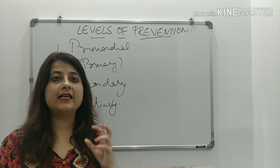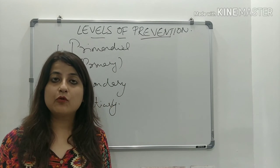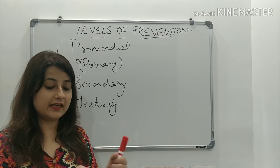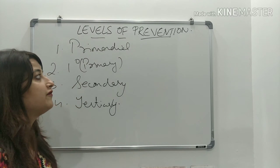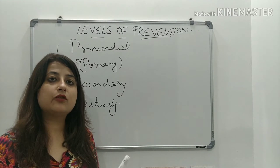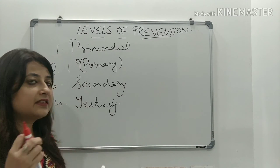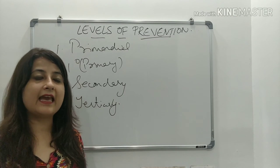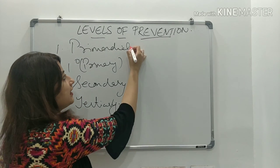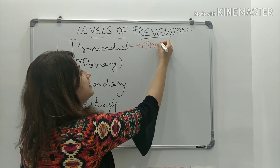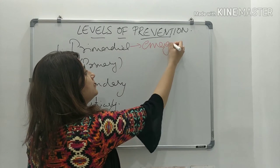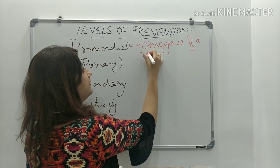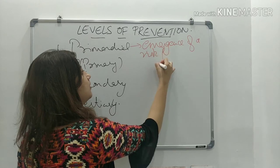Primordial prevention is that mode of prevention which is done to prevent the emergence of a risk factor. The risk factor for a disease is not yet there, so we are trying to prevent the emergence of a risk factor.